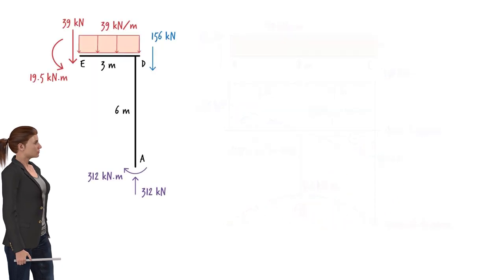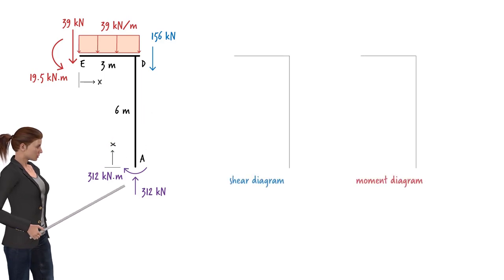Now let's turn our attention to this segment of the frame. The segment consists of two parts: a cantilever beam and a column. Let's define the origin of the coordinate system for the beam at point E, where x is going from left to right. And for the column, we can set the origin at A with x pointing upward. Since there is no horizontal force at A, shear at the lower end of the column is 0. And since there is no applied load on the column, no shear force develops in the member.